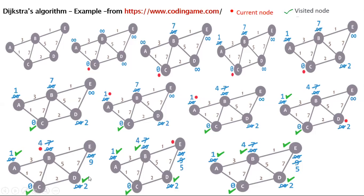Next, we have B as the current node since its distance of 4 is less than E's distance of 9. We compute 4 plus 1 equals 5, so we relax the distance of E from 9 to 5. All other nodes are visited, so the last node is E. We are done. The shortest paths from node C are: to D is 2, to B is 4, to E is 5, and to A is 1.